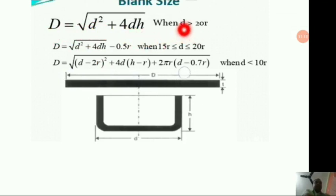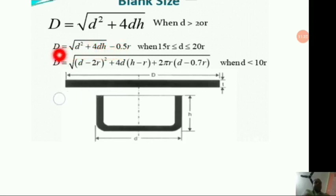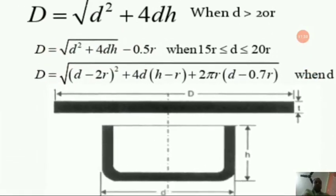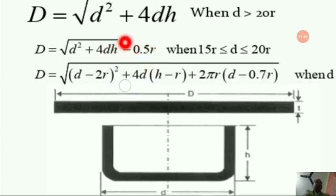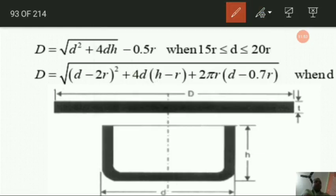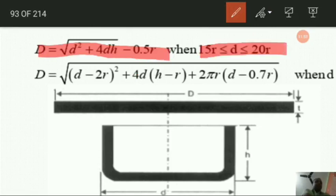There is a condition: when small d should be greater than 20r (radius). A second formula applies when 15r ≤ d ≤ 20r: D = √(d² + 4dH) − 0.5r, where 0.5r is outside the square root. A third formula for when d is less than 10r: D = √[(d−2r)² + 4d(h−r) + 2πr(d−0.7r)].